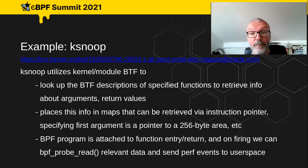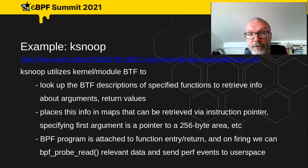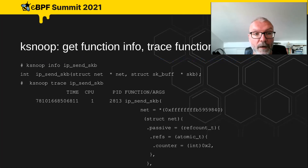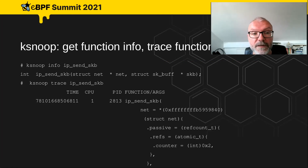I created an example tool called ksnoop, which is basically a way of snooping function entry and return, showing arguments and return values. For example, you can get the function signature for ip_send_skb and then trace it, seeing the entry and return with all arguments and return values displayed.